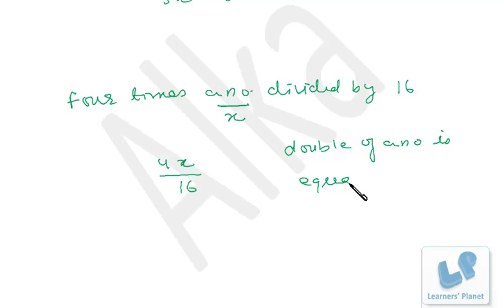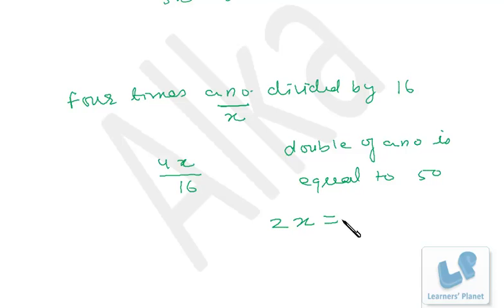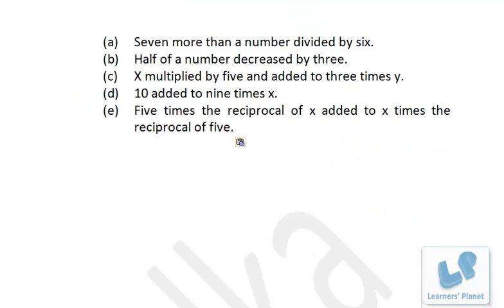Now suppose 'double of a number is equal to 50.' Double of a number means 2 times x, so the algebraic expression is 2x = 50. Let's now practice some more problems.